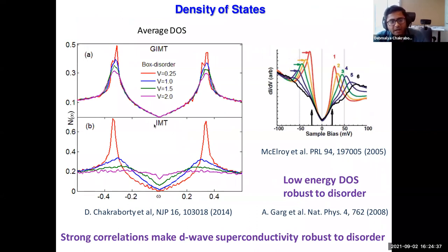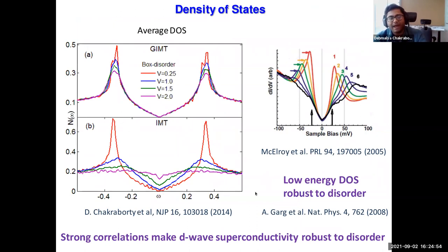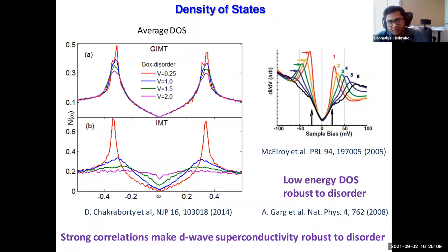This robustness can also be seen in the density of states. Without strong correlation (IMT, red), a conventional d-wave has a V-shaped DOS; increasing disorder reduces the coherence peak and kills superconductivity with no gap. With strong correlation (GIMT), the low-energy DOS is quite robust — also seen experimentally in various systems. This was shown in an earlier paper by Aarti Garg, Mohit, and Nandini. The upshot: strong correlations make d-wave superconductivity robust to disorder.